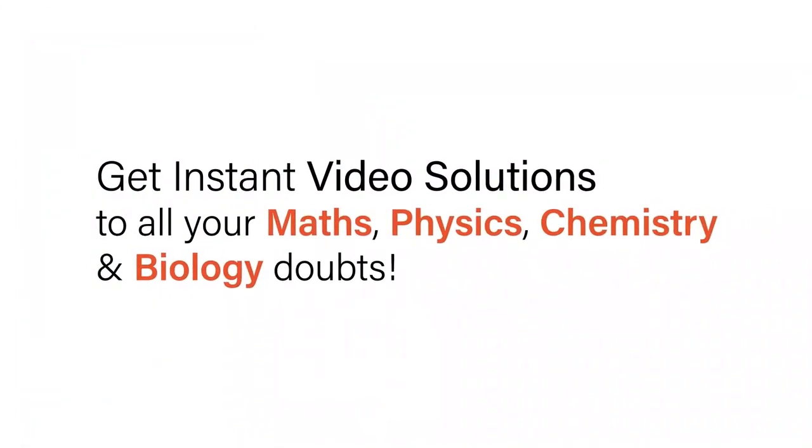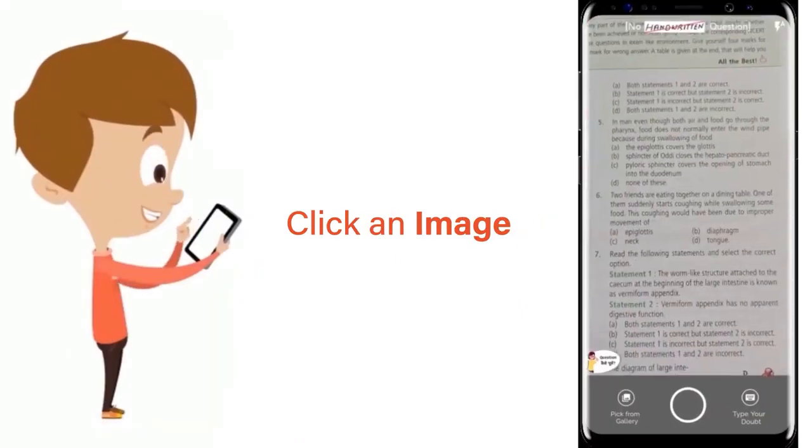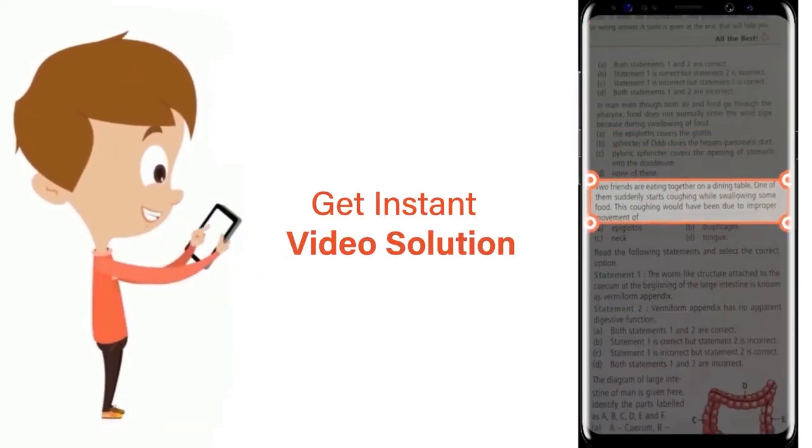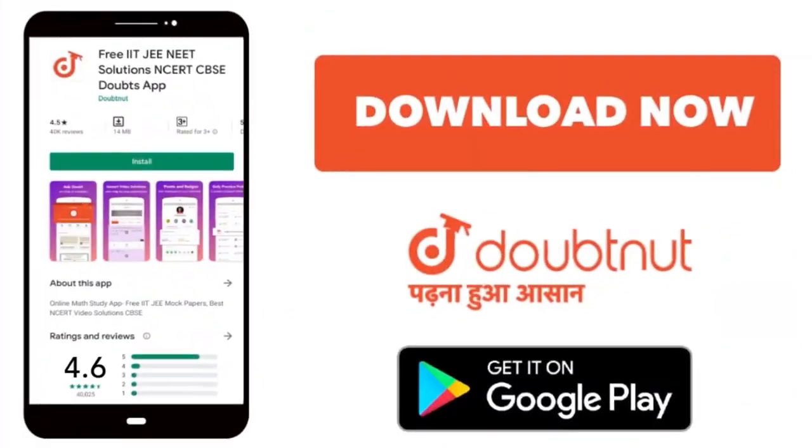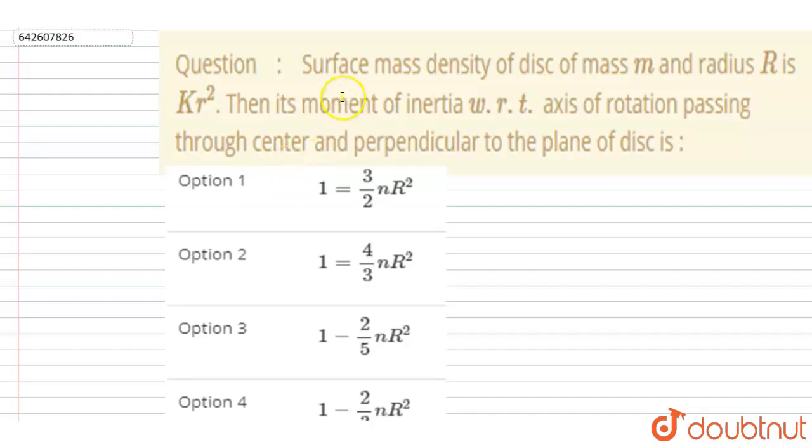With Doubtnet, get instant video solutions to all your math, physics, chemistry, and biology doubts. Just click the image of the question, crop the question, and get instant video solution. Download Doubtnet app today. Hello everyone, surface mass density of a disk of mass m and radius r is given kr square.